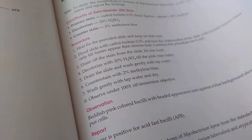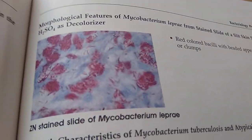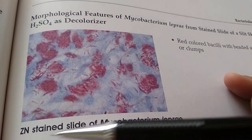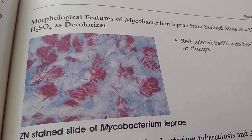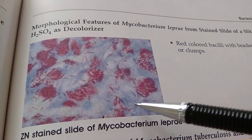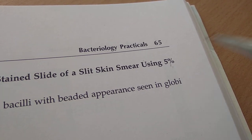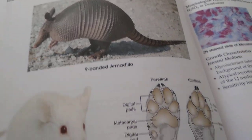I don't know if they have given a diagram of Ziehl-Nielsen stain — yes, this is the diagram. ZN stain slide of mycobacterium. Oh, this is leprae. Anyways, here you will use a different percentage of H2SO4 as decolorizer — that will be 5% H2SO4. This is a split skin smear. They put a photo of armadillo also for you in this book.